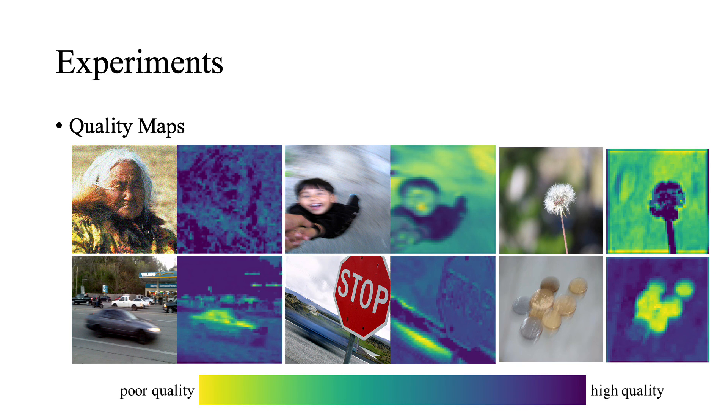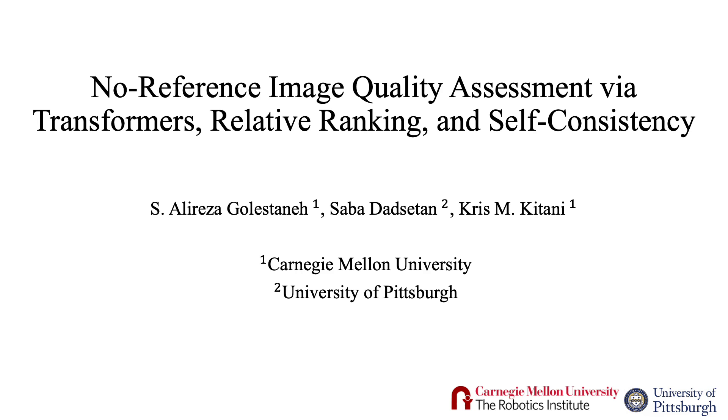We can also see some of the quality maps generated from our proposed model, where the bright areas represent the poor-quality regions and the dark areas represent the high-quality regions. Please check out our paper for more details and results.